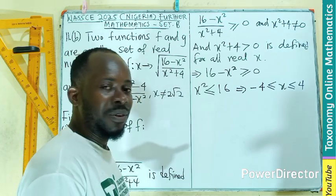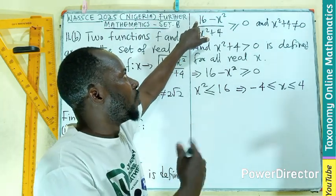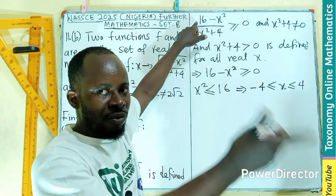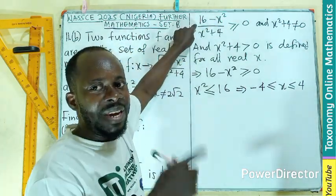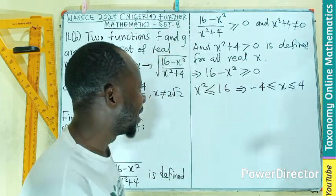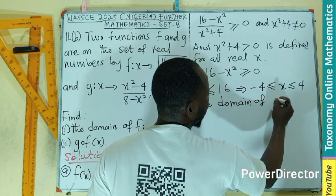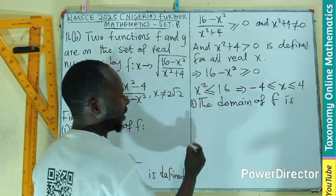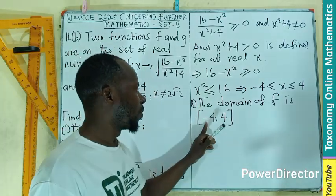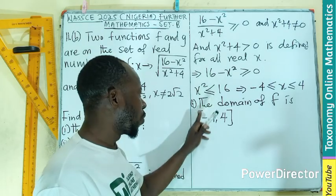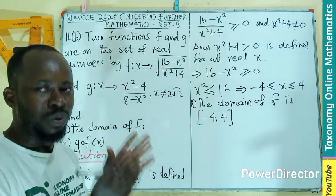If I put negative 4 in, squared it gives 16, and 16 minus 16 equals zero — defined. Going from negative 3 to negative 2, negative 1, zero, one, two, three, four — all fine. But if the number is 5, then 5 squared is 25, and 16 minus 25 is negative 9 — which is what we are avoiding. So the domain of f is the closed interval from negative 4 to 4.